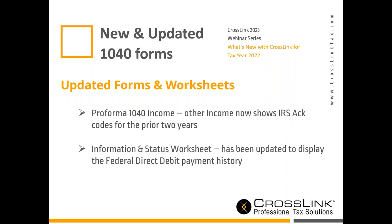For updates to existing forms: when proforming a returning customer year to year, we now show the IRS ACT codes on the 1040 for the prior two years. The Information and Status Worksheet — the gatekeeper of all statuses for your tax return once transmitted, tracking federal, bank product, and state return statuses — now includes federal direct deposit payment history as a new addition. Always check this worksheet after transmitting for the latest return status.